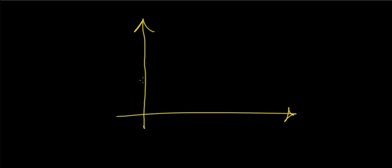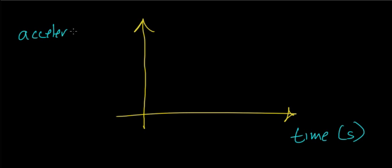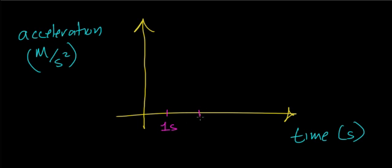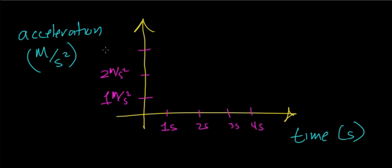The final graph is acceleration versus time. For an object moving with constant acceleration, if I have time on the horizontal axis in seconds — one second, two seconds, three seconds, four seconds — and acceleration on the vertical axis in units of meters per second squared — one, two, three meters per second squared — there will be a nice straight horizontal line, meaning acceleration is constant throughout.